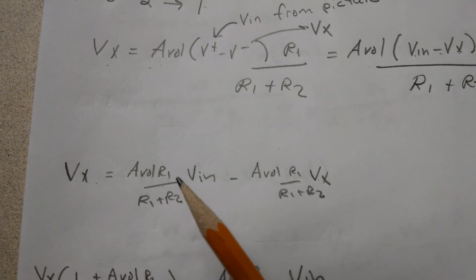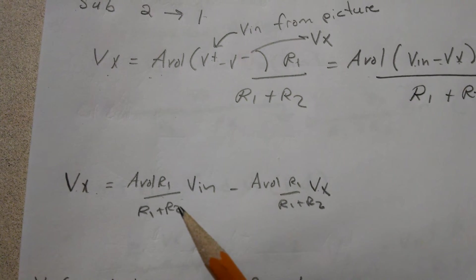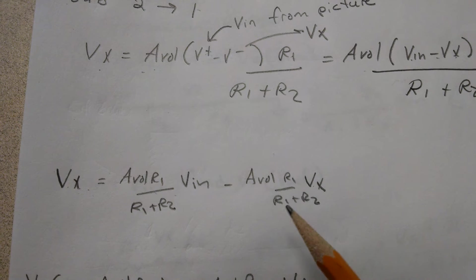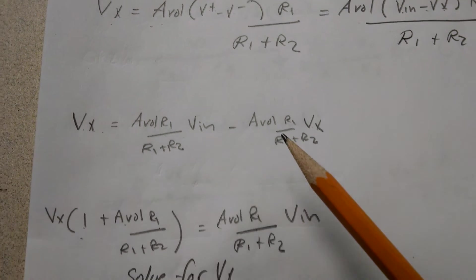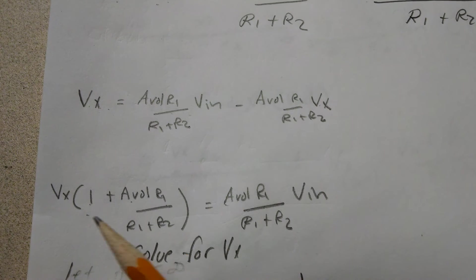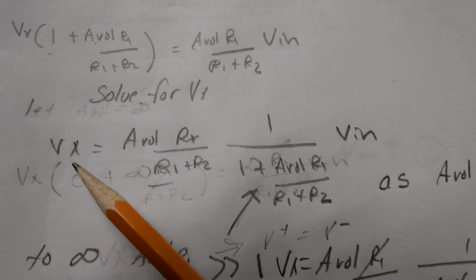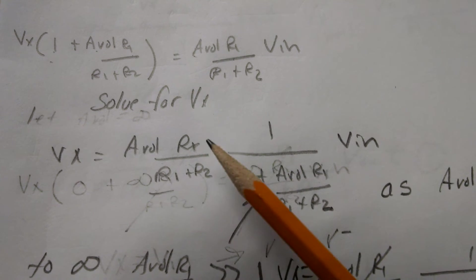Here's our voltage division. Now I have Vx equals open-loop gain Vin times R1 divided by the sum of R1 and R2. I've just propagated that through. I keep working that and I'm just going to solve for Vx.